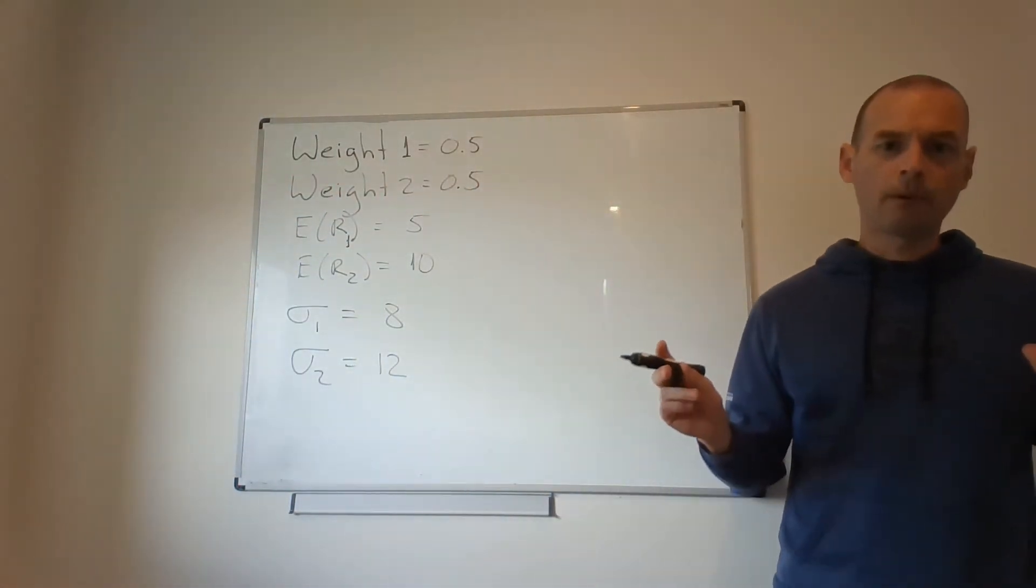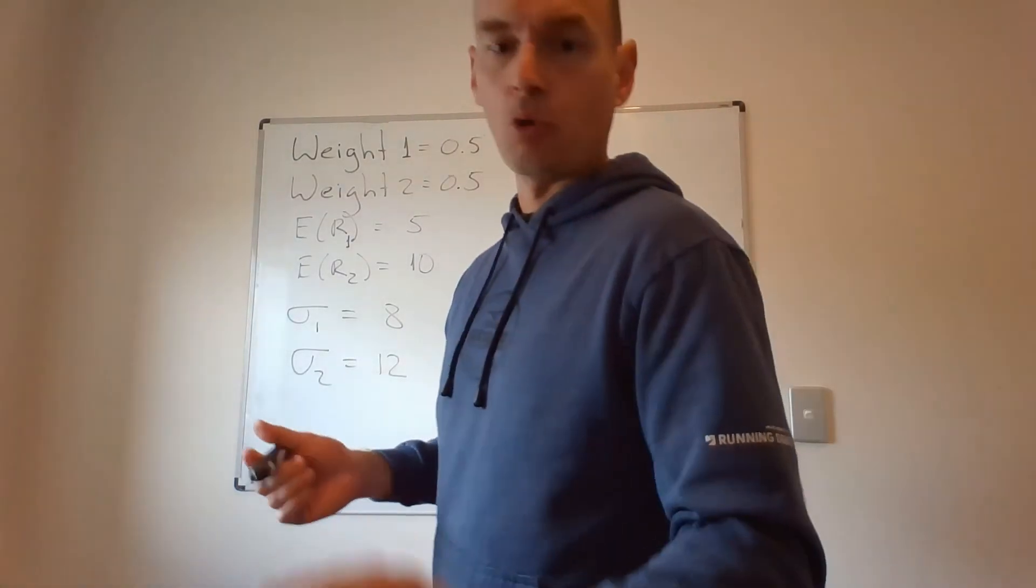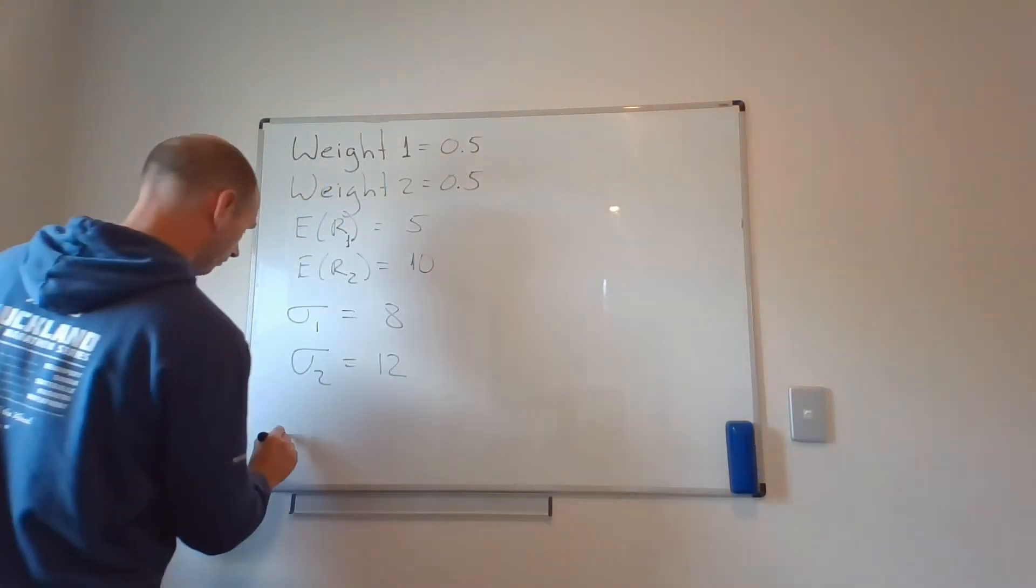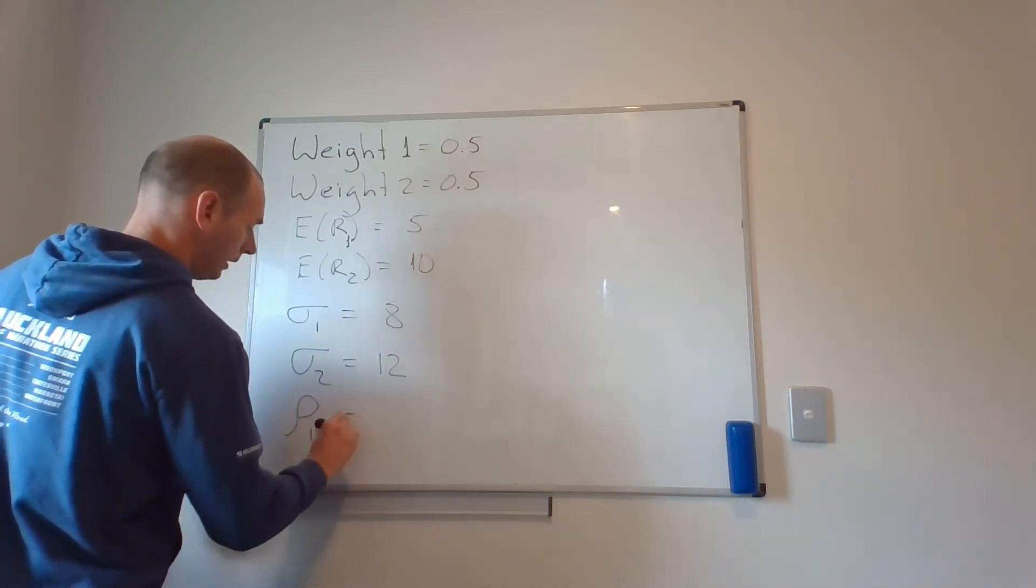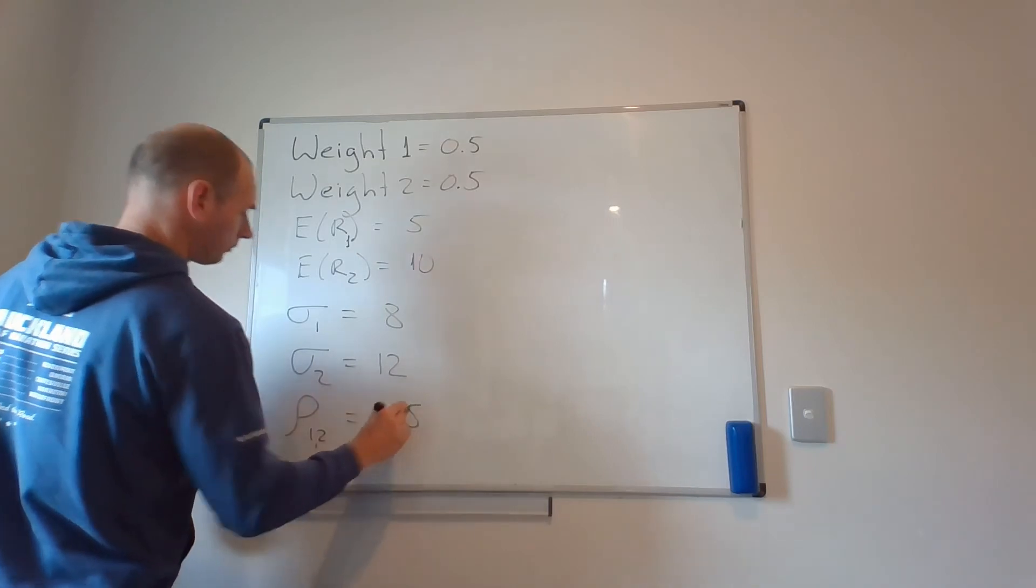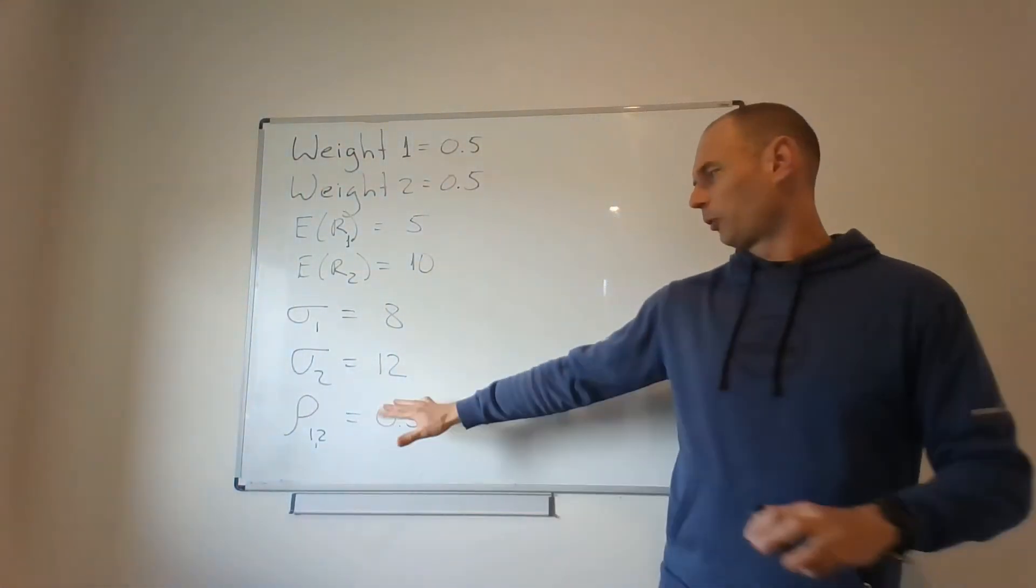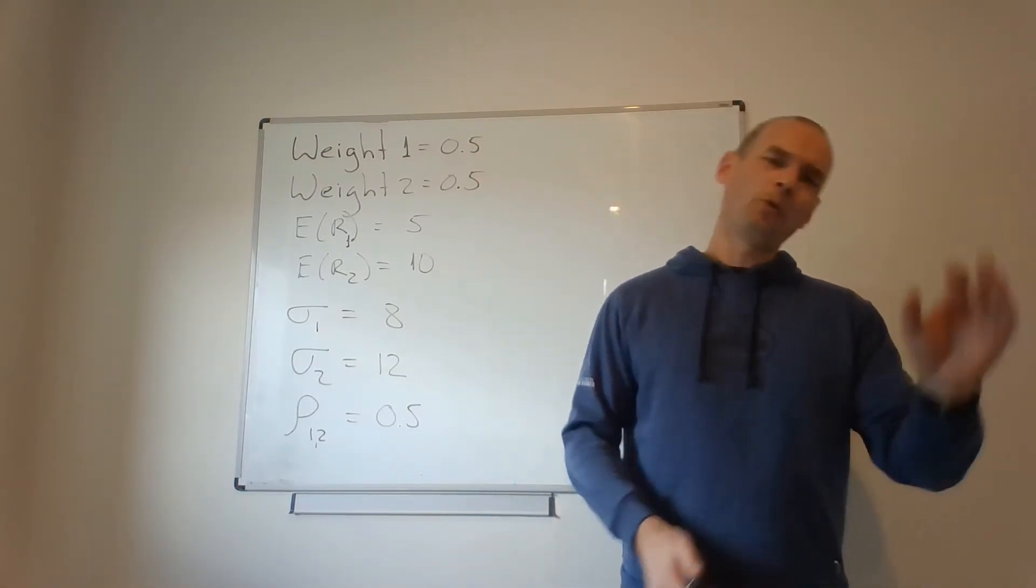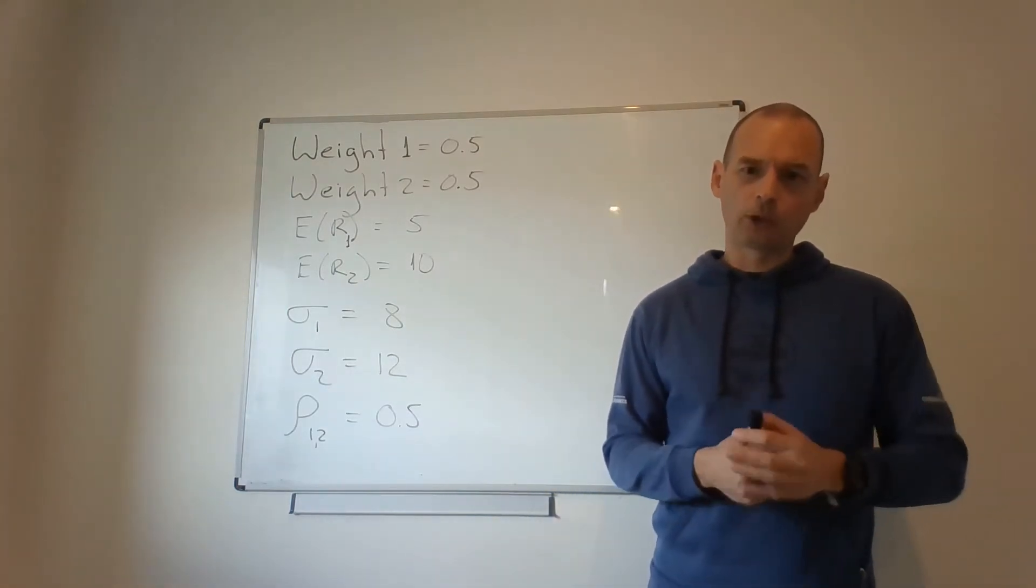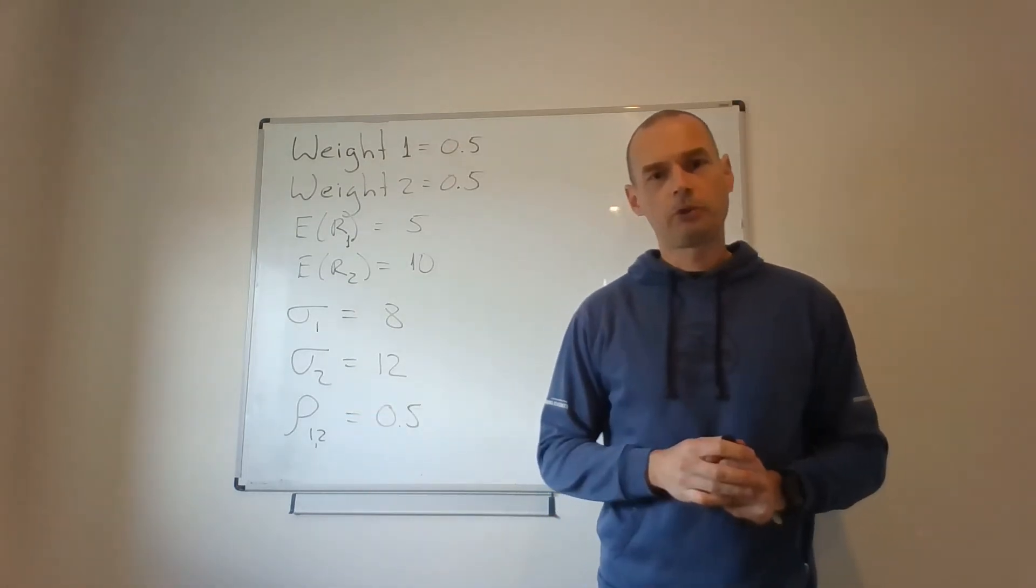And let's say that my coefficient of correlation between one and two is 0.5. It's actually quite common to see coefficients of correlation somewhere in this neighborhood. They are mildly to moderately positive. They wouldn't necessarily be terribly close to plus one, but most of them will be positive. So 0.5 is a good starting point.